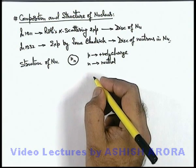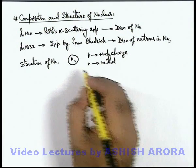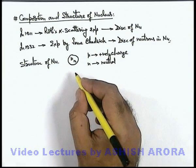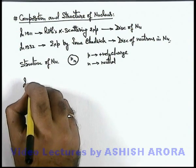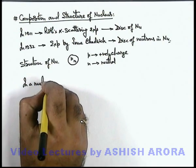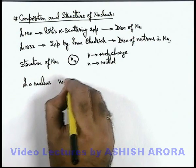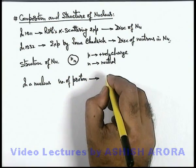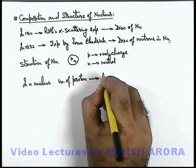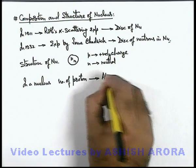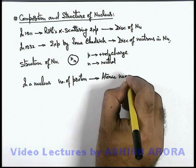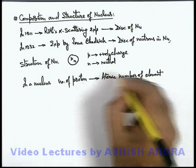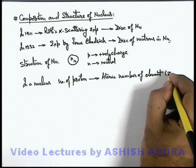Nomenclature and conventions were made for mathematically representing a nucleus. In a nucleus, the total number of protons is given a specific terminological name called the atomic number of the element, denoted by Z.